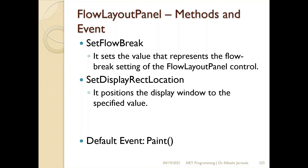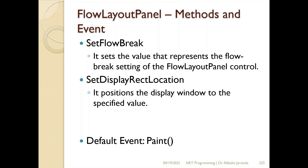The methods of FlowLayoutPanel are: set flow break — if I need to set a breaking point, that is how many controls should be in a particular row before a break. Next is set display rectangle location — it will set the position of a particular display window according to some specific value. The default event of this FlowLayoutPanel control is the paint event.